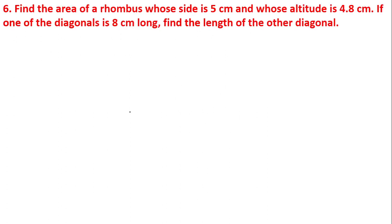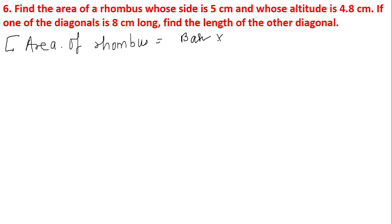Moving on to the next question: find the area of the rhombus whose side is 5 centimeters and altitude is 4.8 centimeters; if one of its diagonals is 8 centimeters long, find the length of the other diagonal. The area of a rhombus can also be found by the formula base into altitude — this is because a rhombus is a kind of parallelogram, so area equals base into height.